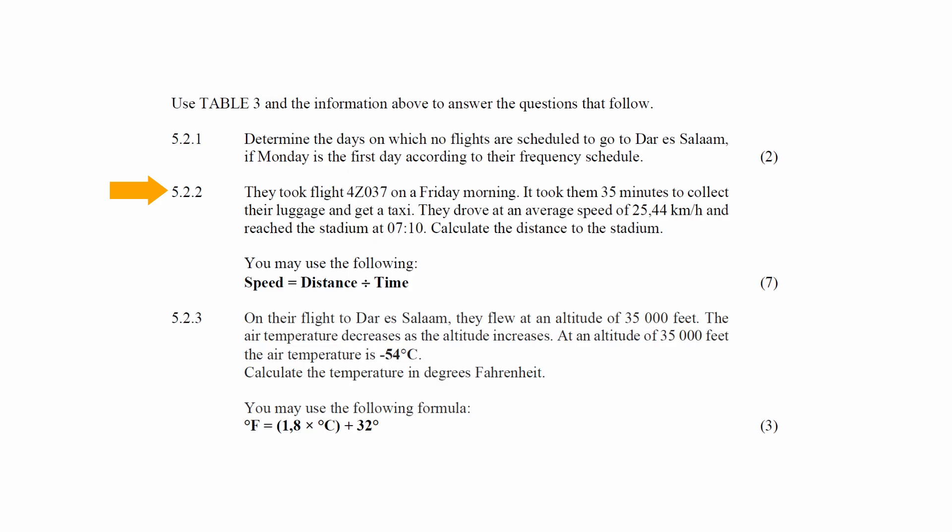In question 5.2.2, it is stated that they took flight 4Z037 on Friday morning. It took them 35 minutes to collect their luggage and get a taxi. They then drove at an average speed of 25.446 km per hour to reach the stadium at 10 past 7 in the morning. You are instructed to calculate the distance to the stadium using the given formula.